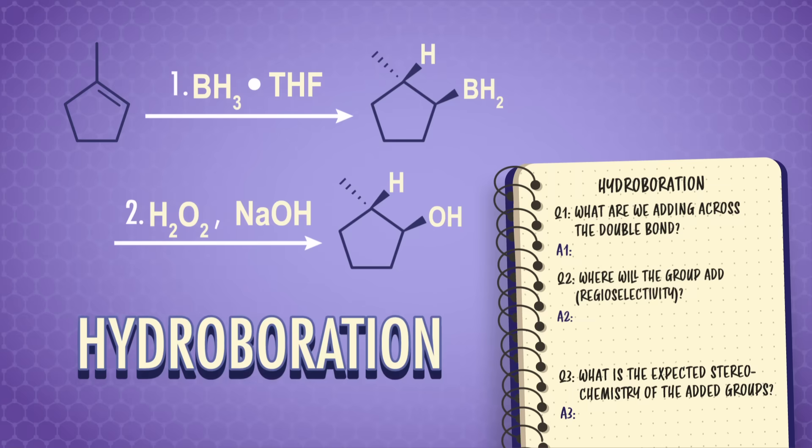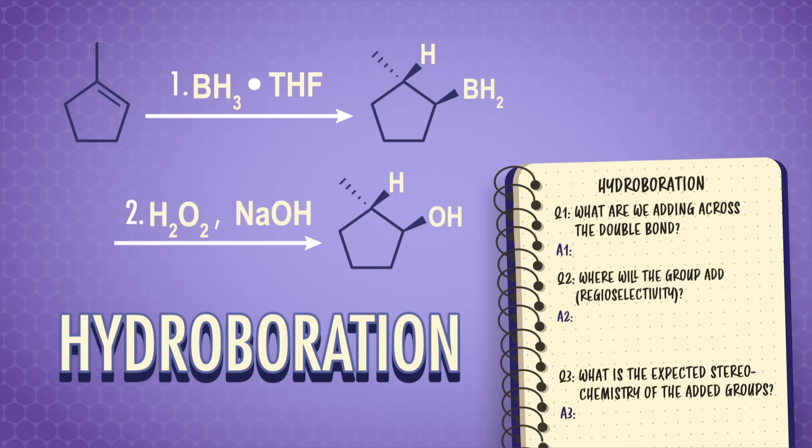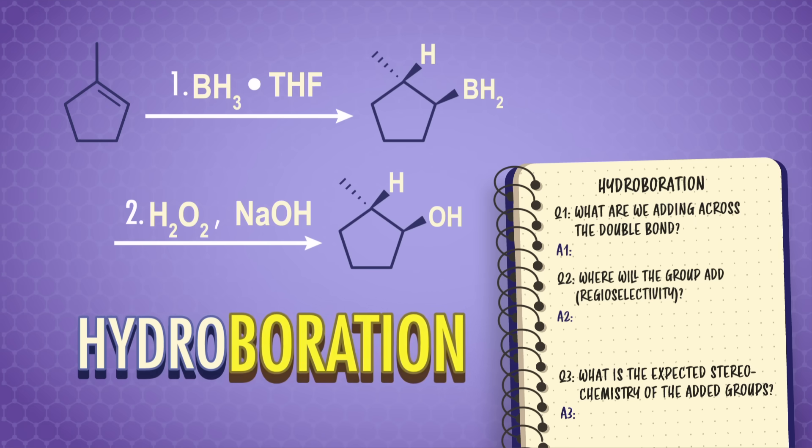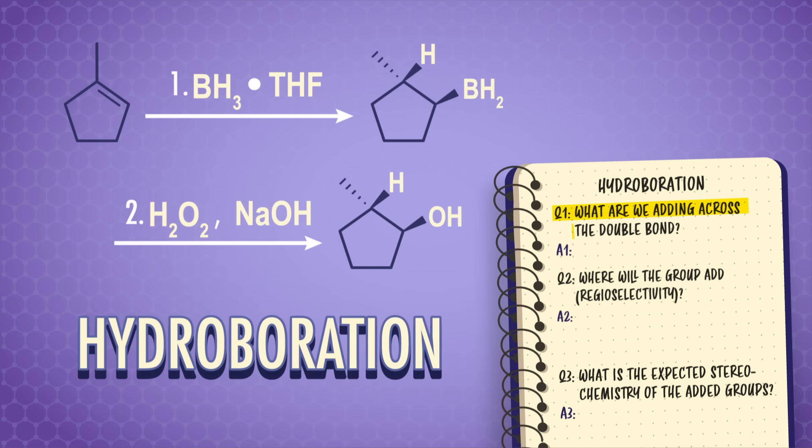Okay, we're going to squeeze just one more alkene addition reaction here, so deep breath, we got this. Our last reaction is called hydroboration. Its name comes from the fact that we're adding water across the double bond, which gives us hydro, and we're going to use boron to help us do it, which gives us boration. So the answer to question number one is, we add borane and replace it with an OH. Overall, it's like adding water across the double bond.